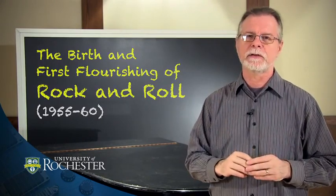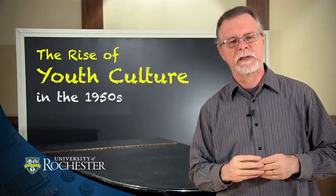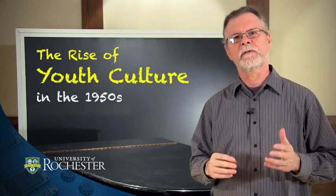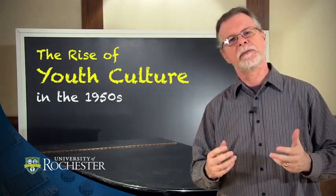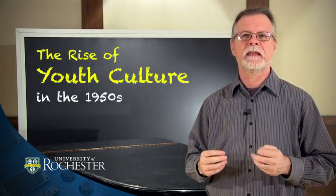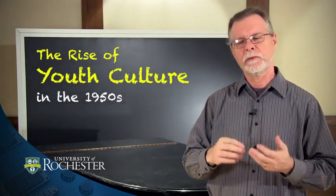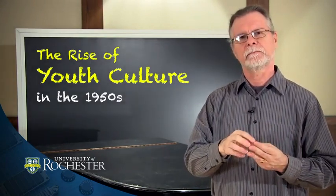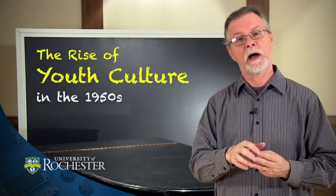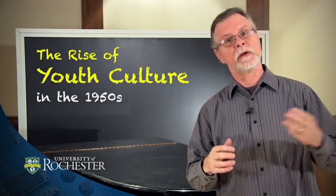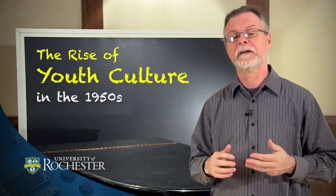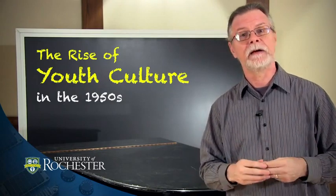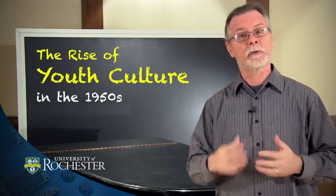In this video, we're going to talk about the rise of youth culture during that period. But before we do, let's briefly review what we talked about in week one. One of the main points is that there were three principal marketing categories of popular music in the period up to 1955: mainstream pop, country and western, and rhythm and blues.